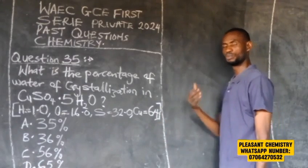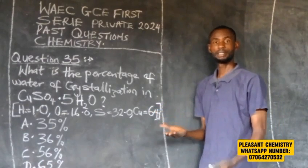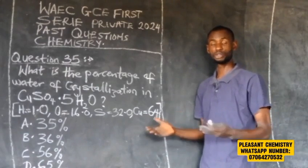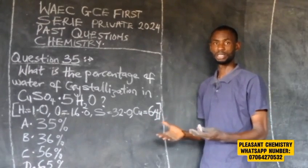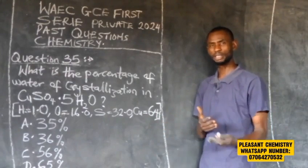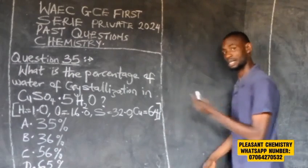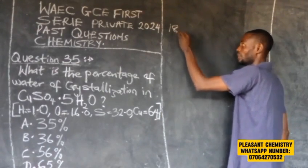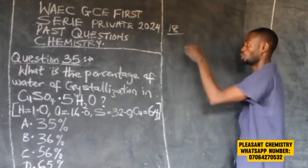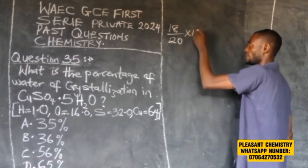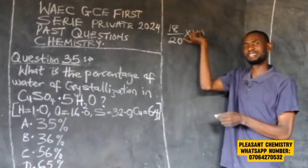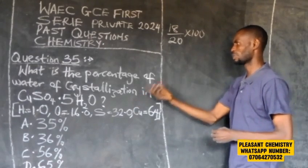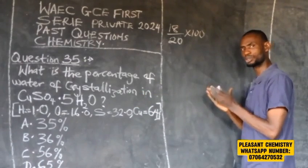Remember, this question is about percentage. Imagine you scored 18 out of 20 questions in chemistry — you calculate your percentage as 18 divided by 20 multiplied by 100. We are going to use a similar method to calculate the percentage by mass of water of crystallization.